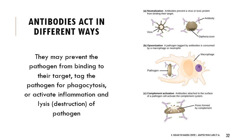When antibodies meet their corresponding antigen they can act in a few different ways: they can bind directly to the target antigen, they can tag the pathogen for phagocytosis — essentially signaling a macrophage to come consume the bacteria — or they can cause broader responses like inflammation or lysis, splitting open the pathogen.